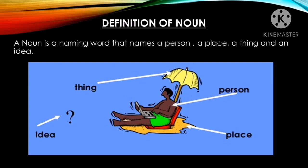Definition of Noun: A noun is a naming word that names a person, a place, a thing and an idea. From the below picture, you can observe different naming words such as person, place, thing and idea.